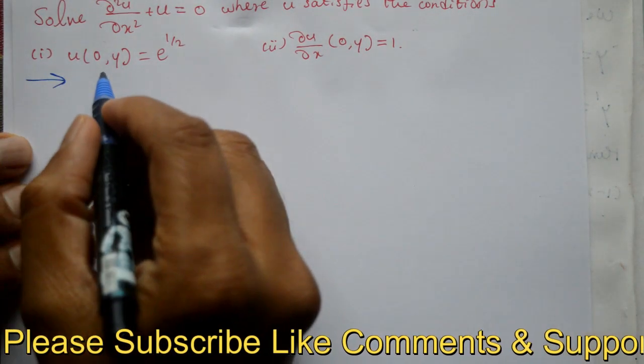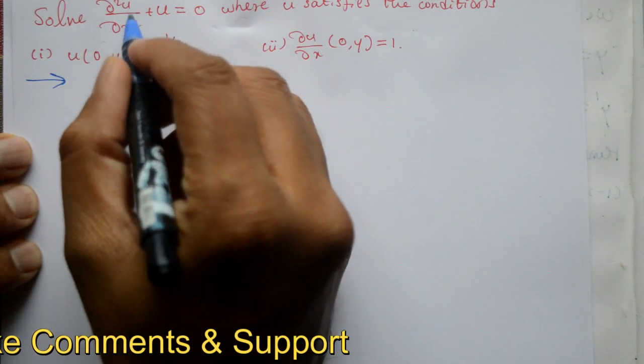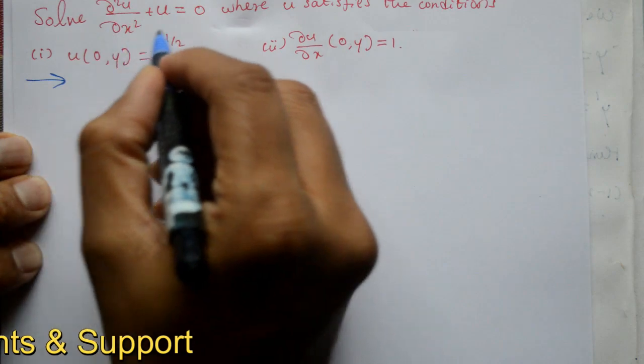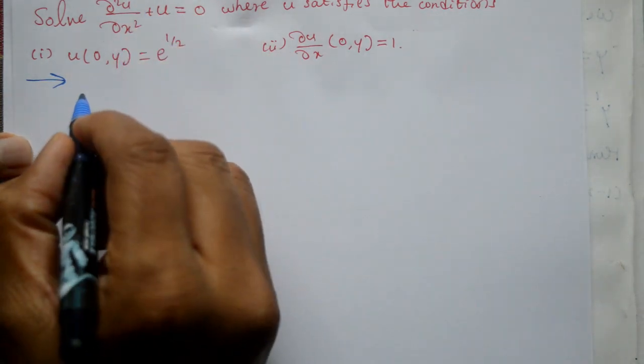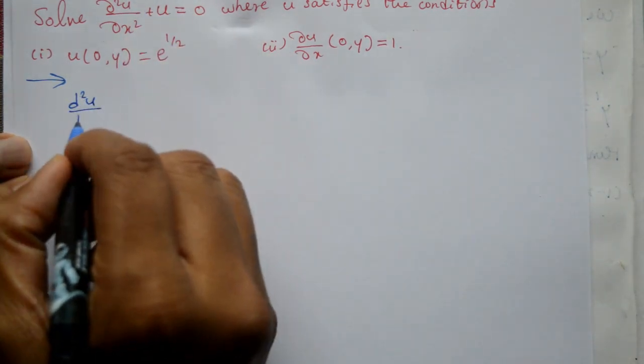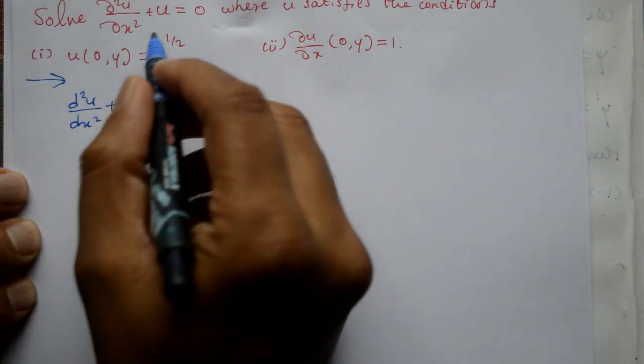Now, first let us suppose that u is a function of x only. Now you can write this partial differential equation, converting to ordinary differential equation: d²u/dx² + u = 0.